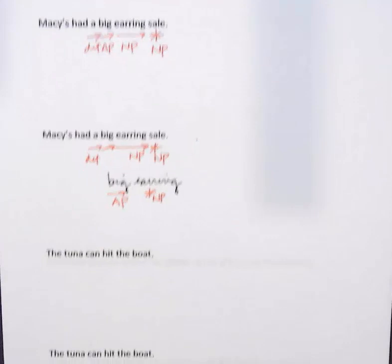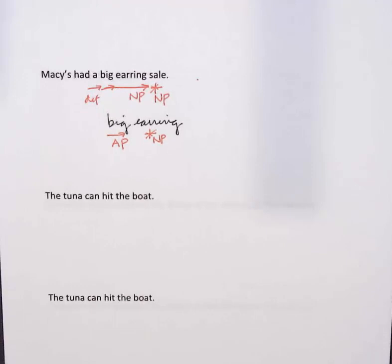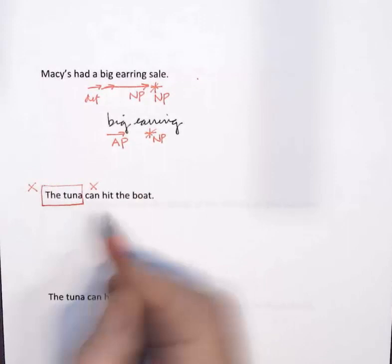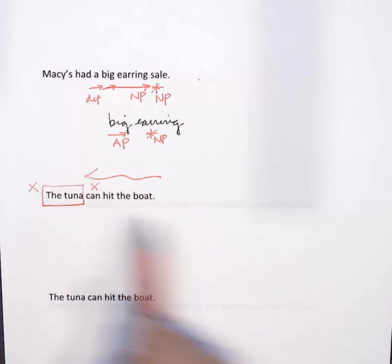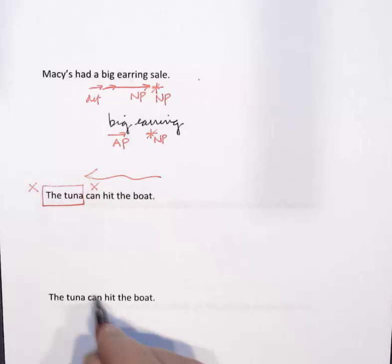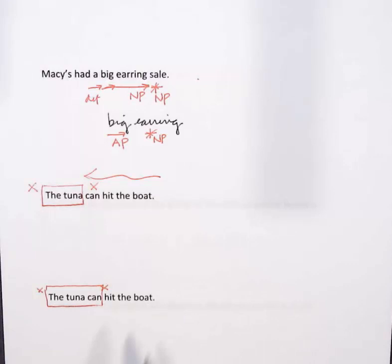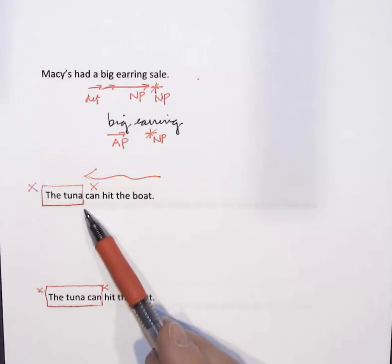Take a couple minutes to find two ways to analyze the next sentence: 'The tuna can hit the boat.' The first interpretation: 'can' is the X-word, 'the tuna' is the subject — the tuna may be able to hit the boat. The second interpretation: the X-word is 'did' — 'did the tuna can hit the boat?' — and now we're talking about a tuna can, not a fish.